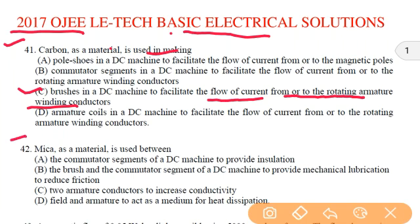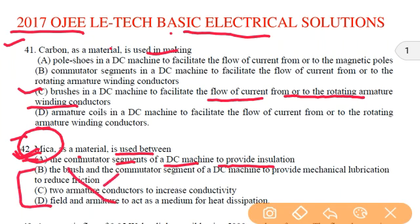Next question, mica is a material which is used between. So mica is an insulating material, so it will provide insulation. So in option number A, it is given that the commutator segments of DC machine to provide insulation, so it's the correct answer. So option A will be the correct answer. In the other options, you can see that it is not for insulation purpose, so all are incorrect.